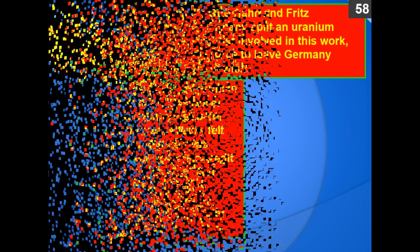In the late 1930s, Otto Hahn and Fritz Strassmann of Germany split a uranium atom. A third scientist involved was Lise Meitner, who was forced to leave Germany because she was Jewish. Hahn and Strassmann received the Nobel Prize in Physics for splitting the atom, but many felt that Meitner was deprived of the credit she deserved, and Hahn refused to acknowledge her contribution in later years. There's a picture of Hahn on the left, Lise Meitner in the center, and Fritz Strassmann on the right.